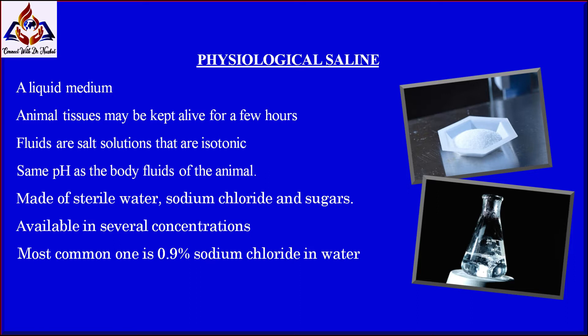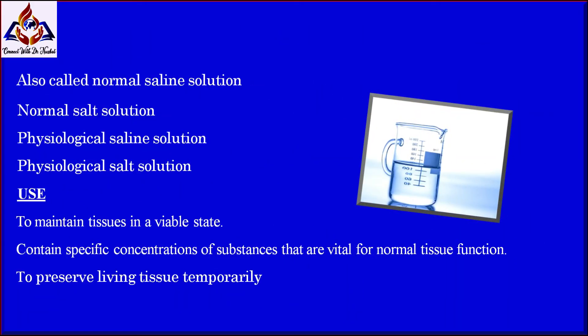Such fluids are salt solutions that are isotonic with and have the same pH as the body fluids of the animal. Physiological salt solution is a solution of a salt or salts that is essentially isotonic with tissue fluids or blood, especially an approximately 0.9 percent solution of sodium chloride, also called normal saline solution or physiological salt solution.